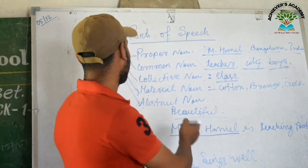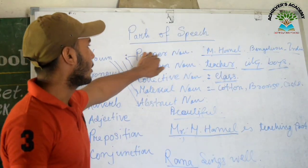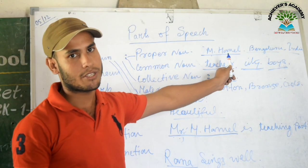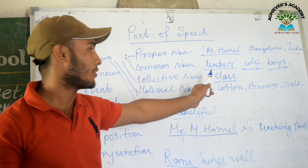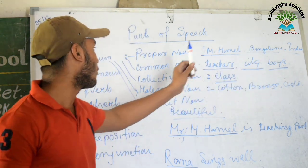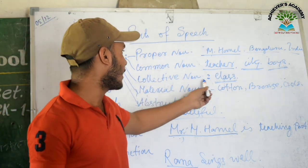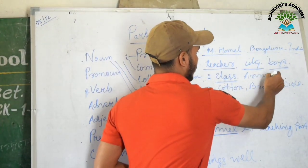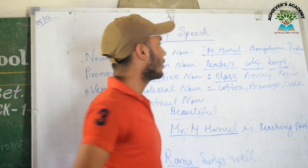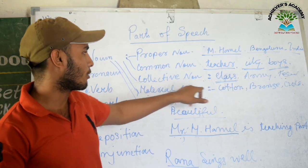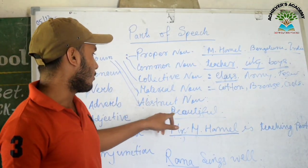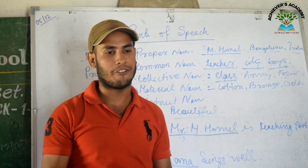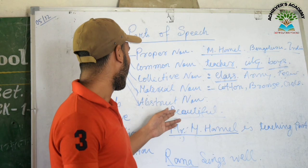Let me repeat the examples. Proper noun: Mr. M. Hamel, Bangalore, India. Common noun: teacher, city, boys. Collective noun: class, group, army, team. Material noun: cotton, bronze, gold. Abstract noun — things which you cannot see but you can feel — like love and beauty. These are all abstract nouns.